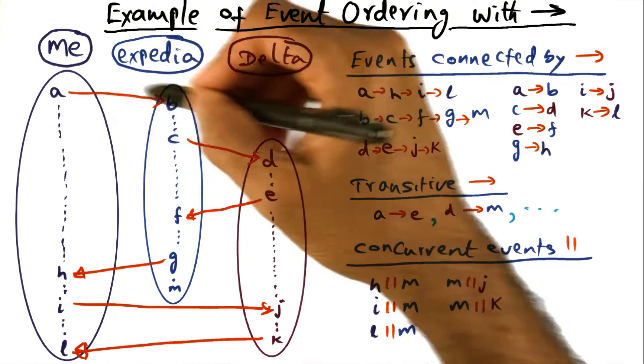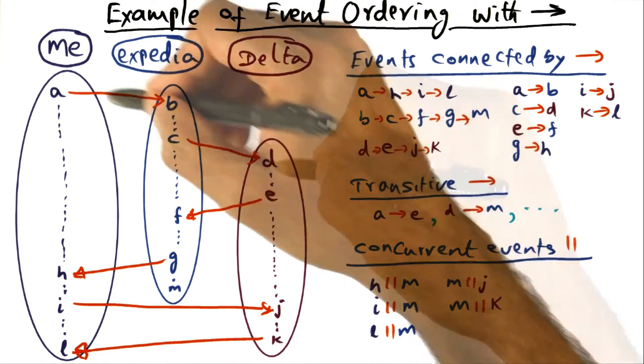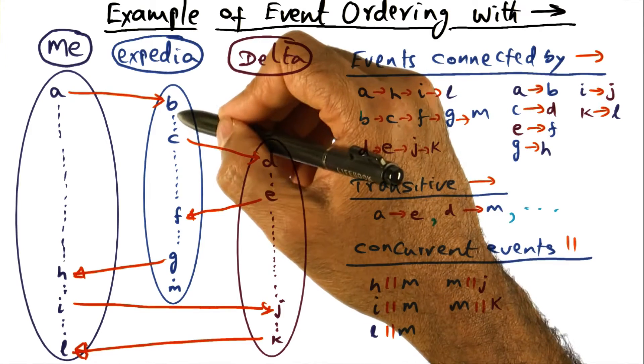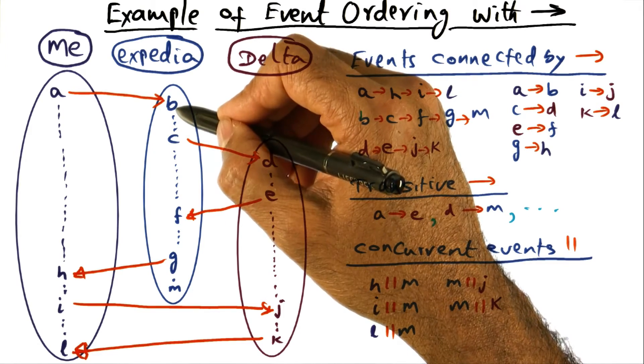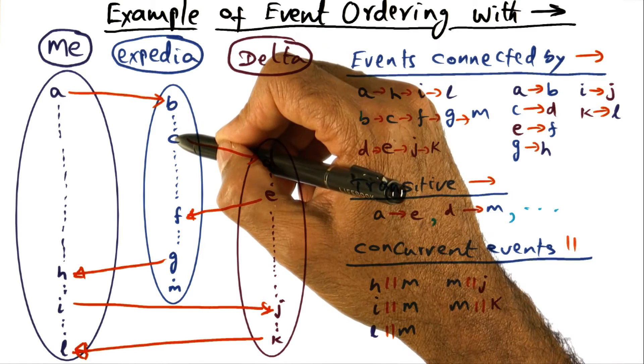if you look at A, it happened before B. B happened before C. C happened before D. All of these are communication events, pretty straightforward. So from here to here, it's not a communication event. But since the process is sequential, B should have happened before C.